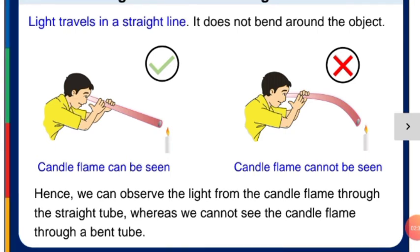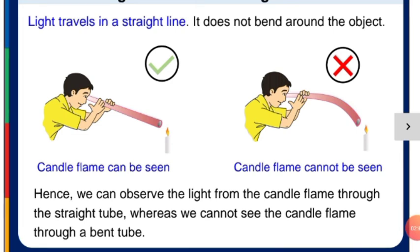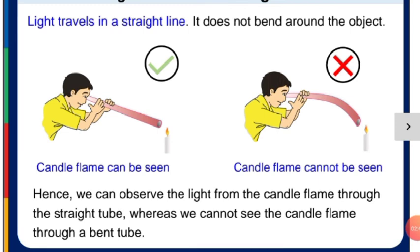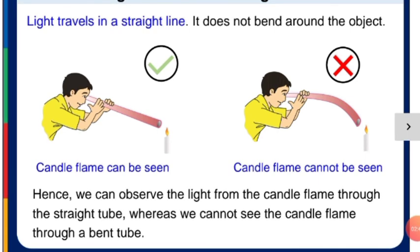We can observe the light from the candle flame through the straight tube, whereas we cannot see the candle flame through a bent tube. This is a very easy process to prove that light travels in a straight line.